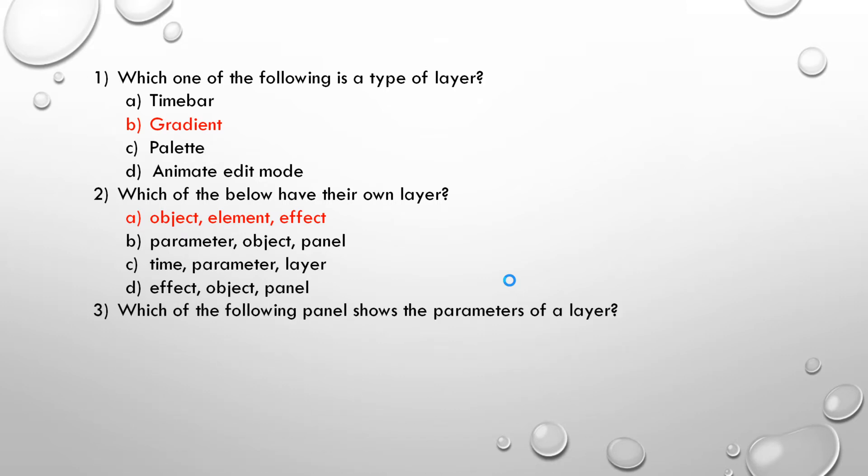Which of the following panels show the parameter of a layer? A. Layer. B. Keyframe. C. Param. D. Time track. Correct answer is Param. It will show the parameter of any layer.